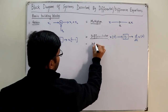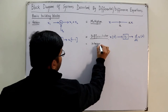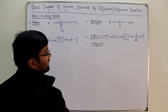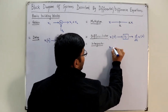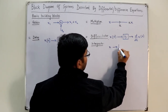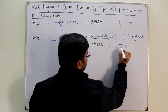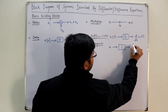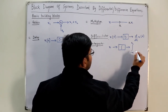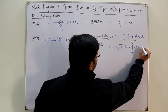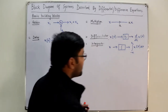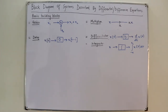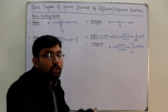The fourth building block is the integrator. You give it an input x and it takes the integration from negative infinity up to some value t of x(τ) dτ. These are the basic building blocks. Now we move directly into simpler examples and then progress to more complex ones.